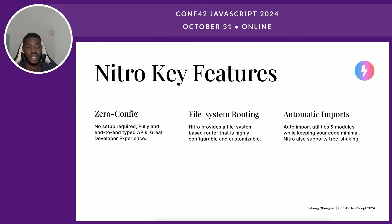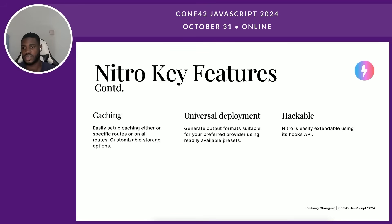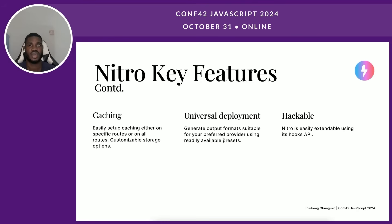Nitro also has automatic imports. Using the unimport package, Nitro auto-imports utilities and modules, keeping your code minimal and thin. It also supports tree shaking and code splitting to keep your bundle size small. Nitro provides caching out of the box — you can set up caching on specific routes or all your routes, with customizable storage options. Then there are universal deployments: NitroJS does not lock you in, and you can deploy to whatever provider you want. Nitro is also hackable — you can easily extend Nitro's API using its runtime hooks.